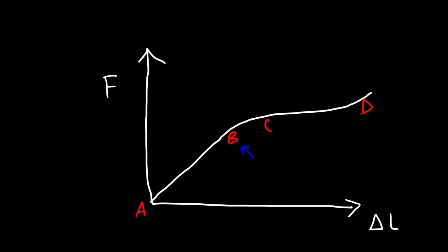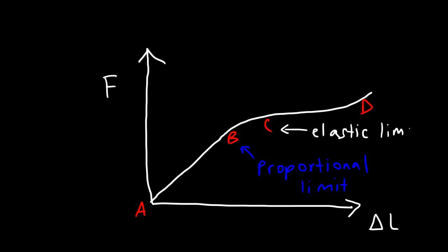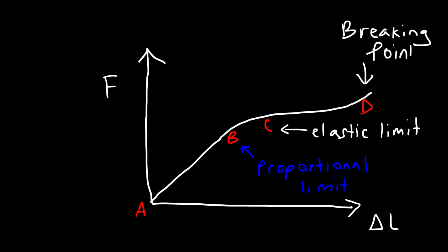Point B is known as the proportional limit — you could probably guess what that is based on the wording. Point C is the elastic limit, and point D is the breaking point. In the region between A and B, up to the proportional limit, notice that it's linear. It follows the equation F is equal to k times delta L, so it follows Hooke's law.